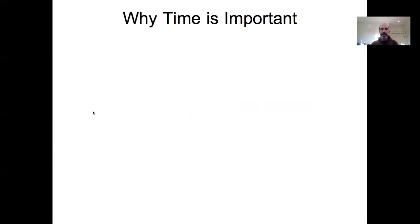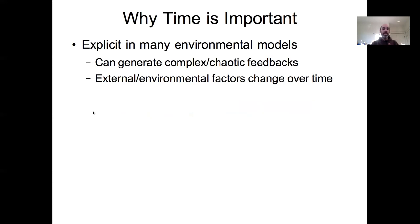So why is time important? Most of what we've looked at before has been relationships between some X and Y. But in many of the models we work with in environmental sciences, time is an explicit part of the process models — things like dynamic models, ODEs, PDEs, recursive dynamic models, matrix models, and pool-based models. A lot of models are explicitly trying to predict how things change over time.